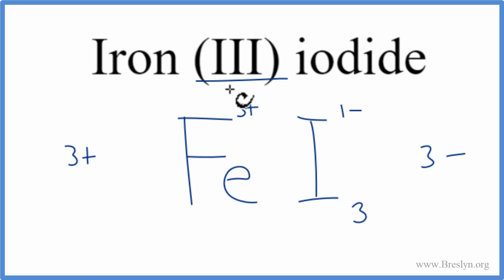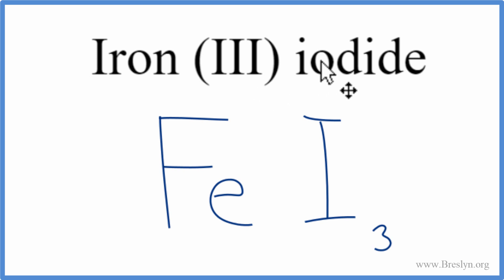This is the correct formula for iron 3 iodide. Let's clean it up. And that's it. The formula for iron 3 iodide, FeI3.